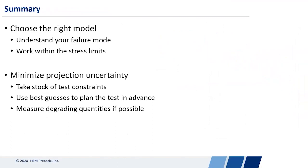So with that, just a recap. The important factors when you're designing an accelerated test are that you choose the right model, which entails understanding your failure mode and understanding the stress limits of your part and minimizing what I'll call the projection uncertainty, which is basically done through clever test design, describing what your test constraints are, using your best estimates to plan the test, using some sort of statistical test design tool and potentially measuring degrading quantities if those are present and easy to measure and don't require you to disassemble the whole test fixture.